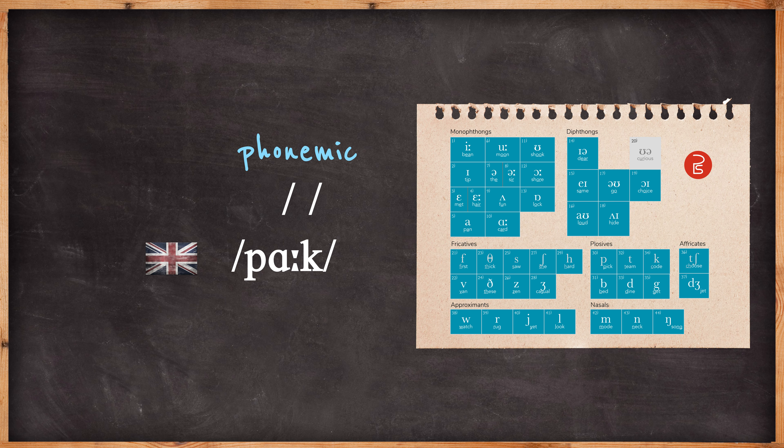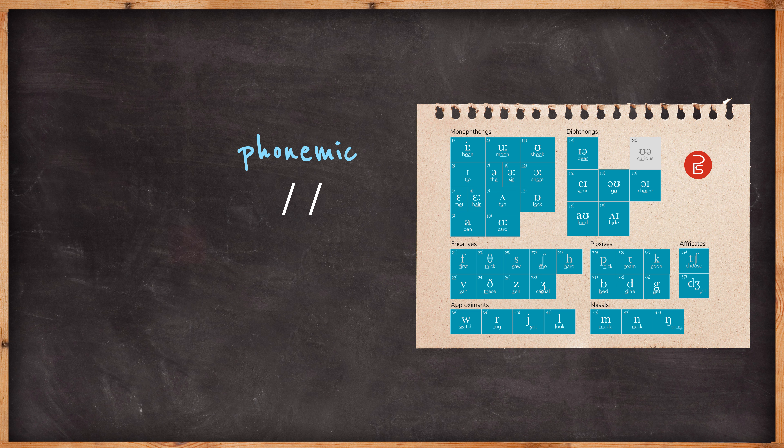The selection of sounds a dictionary will use in a phonemic transcription are fixed. British English dictionaries normally use an alphabet of 44 sounds or phonemes such as these, which is the chart we use at Pronunciation Studio and is the same selection as the Oxford English Dictionary.